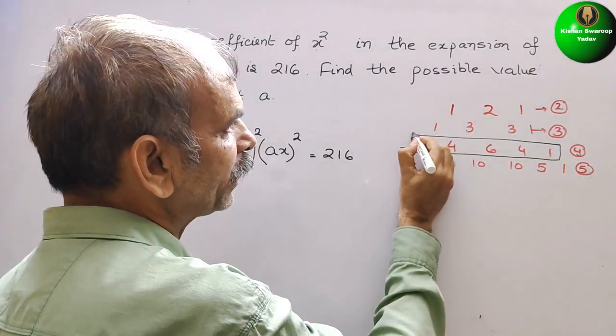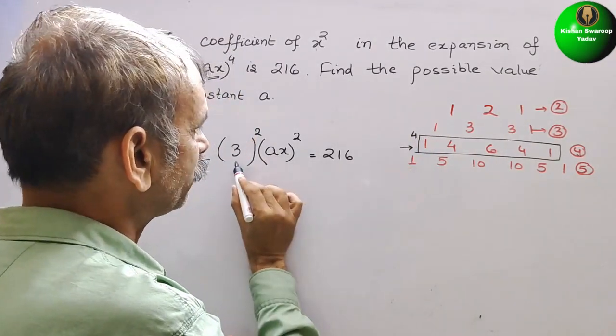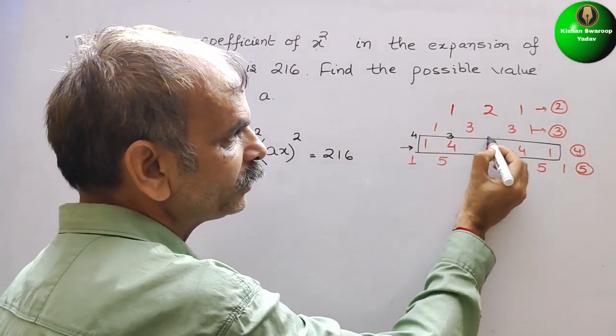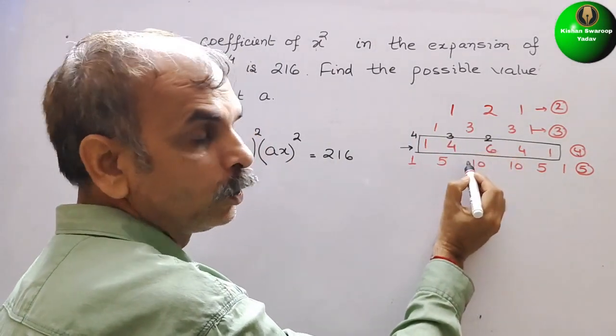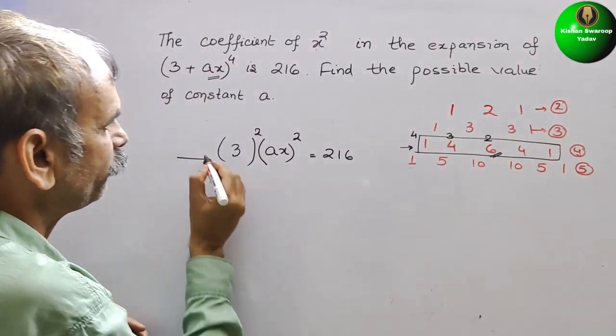So that means here you will get 4 power. Next, first term, here it will get 3. For the first term, here you will get 2. So therefore, the coefficient is 6 here. So here we will write 6.